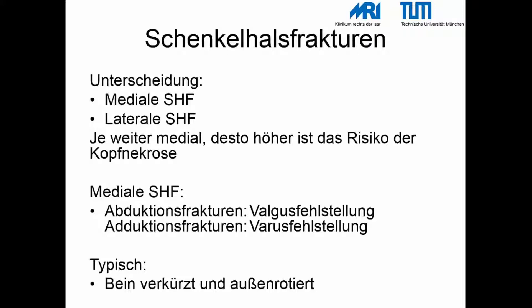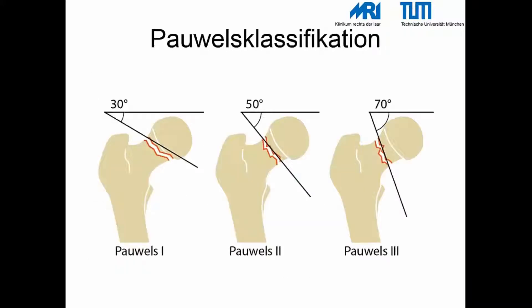Mediale Schenkelhalsfrakturen können entweder mit einer Valgus- oder Varusfehlstellung zu liegen kommen. Typisch ist das verkürzte Bein in Außenrotationsstellung. Die Pauls-Klassifikation legt eine horizontale Linie parallel zu den beiden Sitzbeinhöckern und misst den Winkel der Frakturlinie dazu. Bis 30 Grad liegt eine Pauls-1-Fraktur vor, zwischen 30 und 50 Grad eine Pauls-2, und alles über 50 Grad eine Pauls-3. Die genauen Winkelgrade können je nach Literatur zwischen 50 und 70 Grad schwanken.